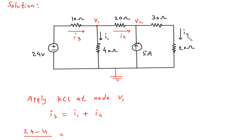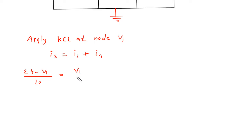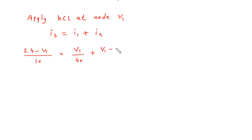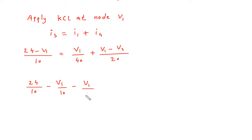I1 is (V1 minus V2) by 40, and I4 is (V1 minus V2) by 20. Expanding: 24/10 minus V1/10 equals (V1 minus V2)/40 plus (V1 minus V2)/20. Rearranging: minus V1/10 minus V1/40 minus V1/20 plus V2/20.